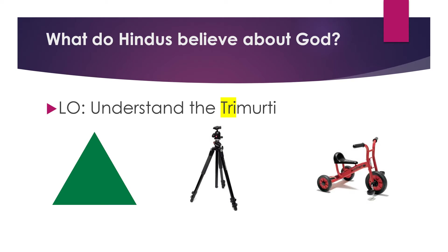Have a look at the three pictures. What do they have in common? What is similar? A triangle has three sides, a tripod has three legs, and a tricycle has three wheels. So it is going to be important today that we remember the number three for the Trimurti.